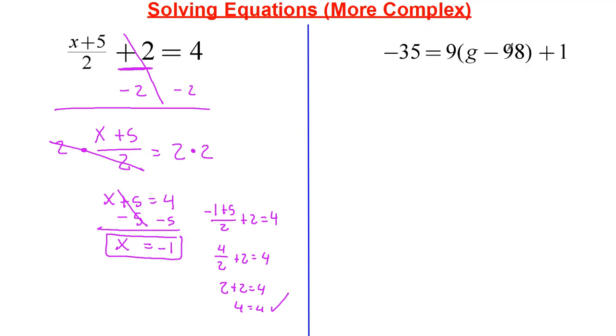Now this has a mix. There's no fractions here, but you can see we're using the distributive property. So I'm going to multiply 9 by g, and I'm going to multiply 9 by negative 98. So negative 35 equals 9 times g is just 9g. They're not like terms, so I just have to put them next to each other. Now 9 times 98 is 882, and then I just have the plus 1.